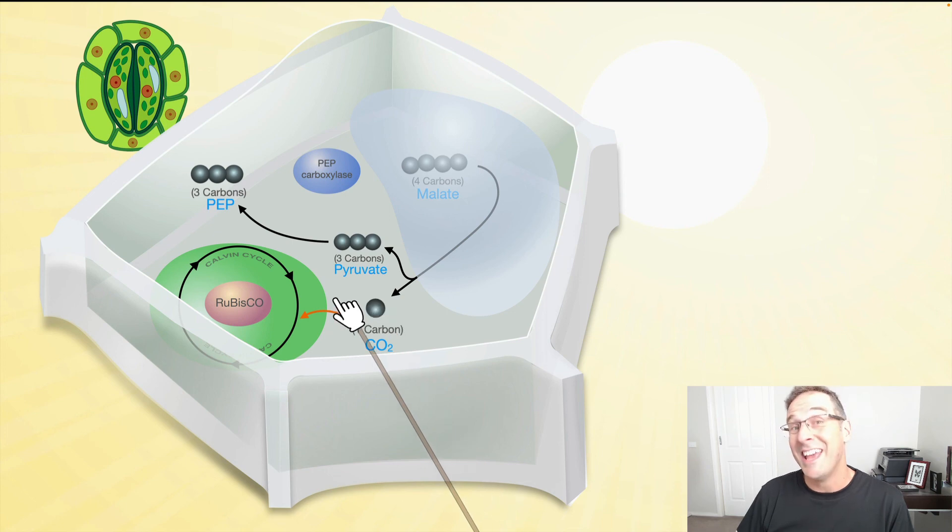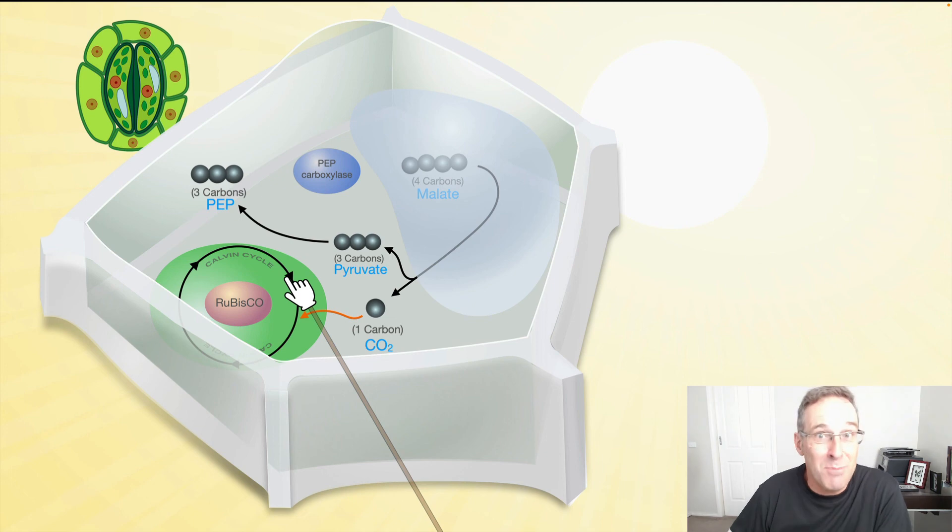The carbon dioxide then enters the Calvin cycle where this enzyme rubisco is operating, which produces glucose and water, the outputs of the light-independent stage of photosynthesis. So at the end of that, we're going to end up with glucose, we're going to end up with water, and we're going to end up with a recycled molecule of phosphoenolpyruvate or PEP.